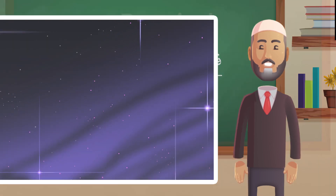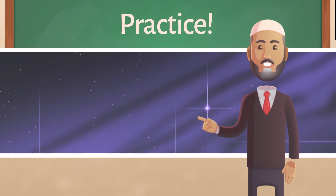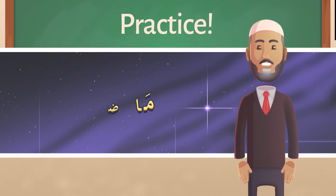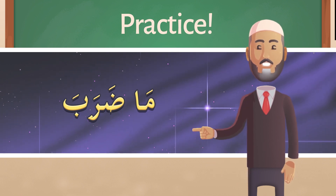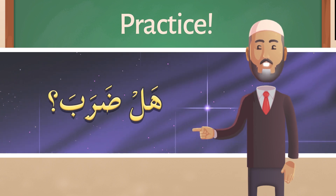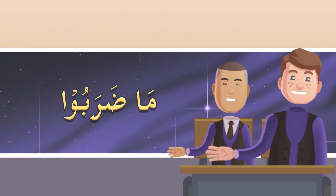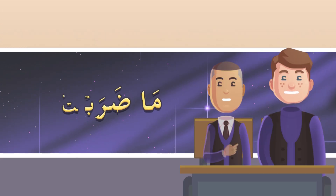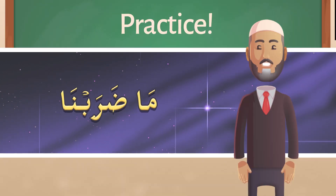MashaAllah. Let's use these forms in spoken Arabic. None of us has hit anyone, so I say: 'Did he hit?' — you negate فعل ماضي with ما — 'He did not hit.' Answer me: هل ضربوا؟ ما ضربوا. هل ضربوا؟ ما ضربوا. هل ضربت؟ ما ضربت. هل ضربتم؟ ما ضربنا.